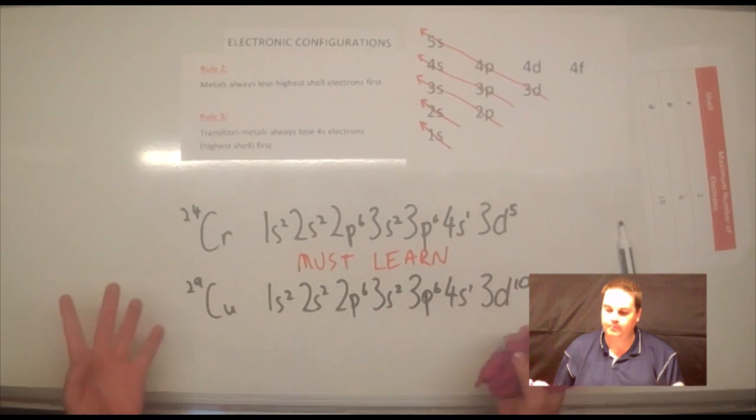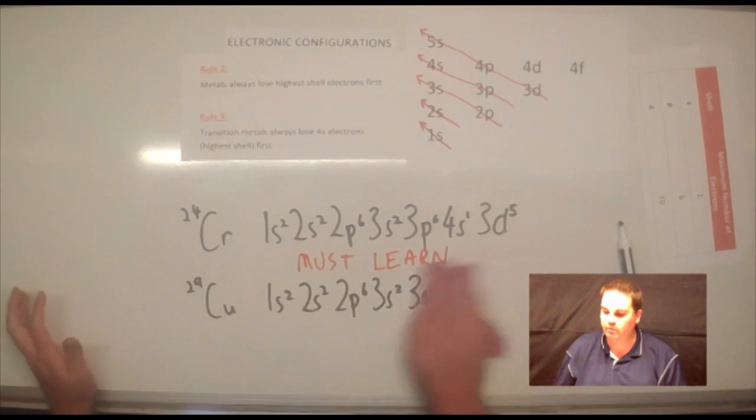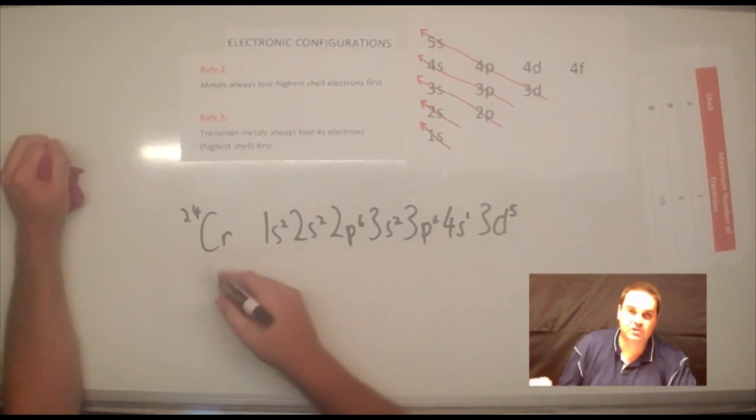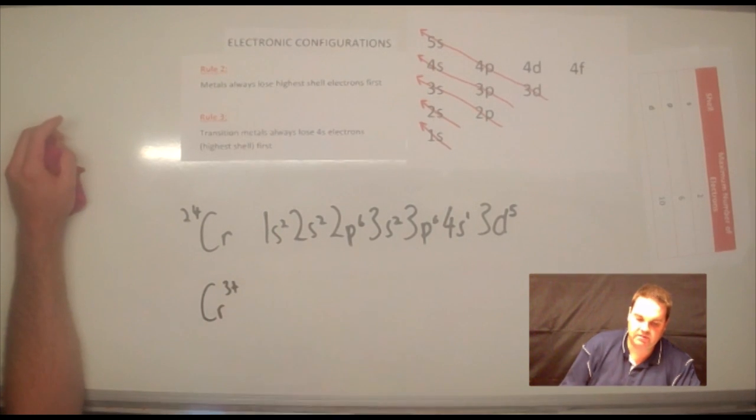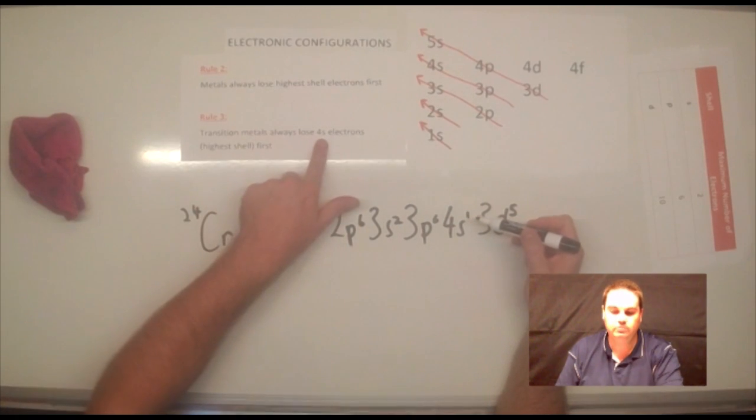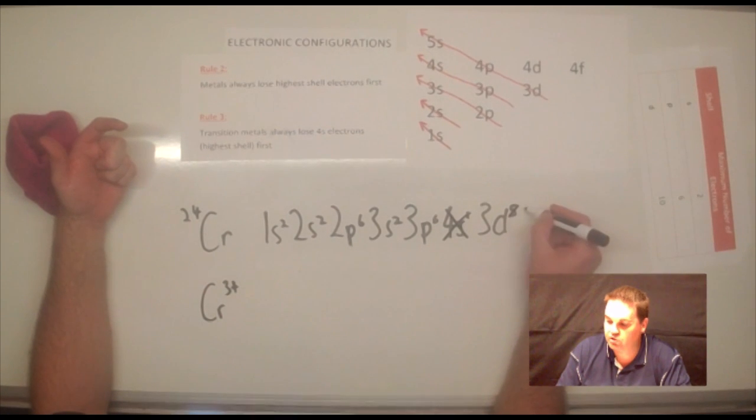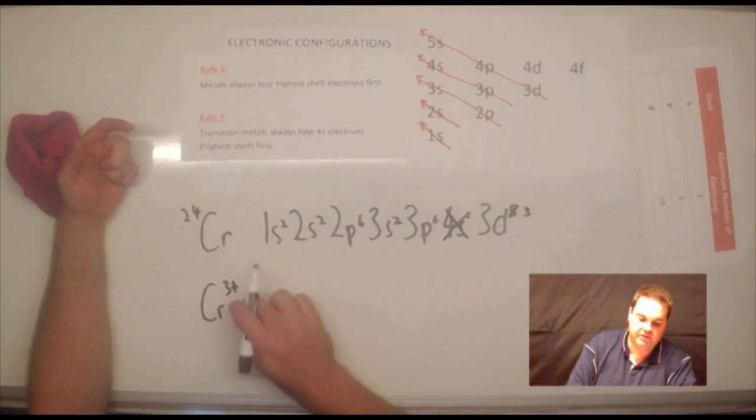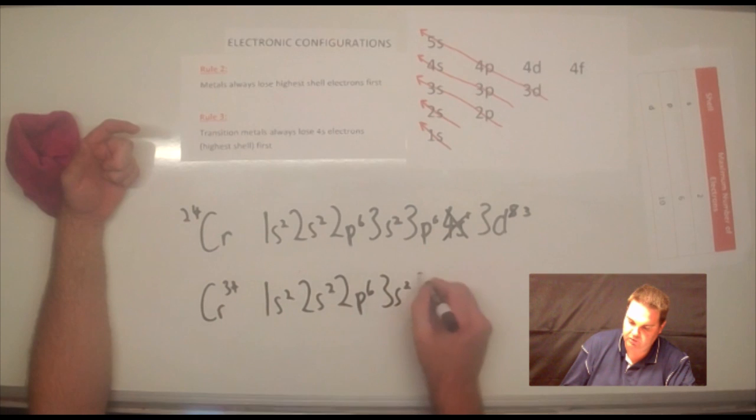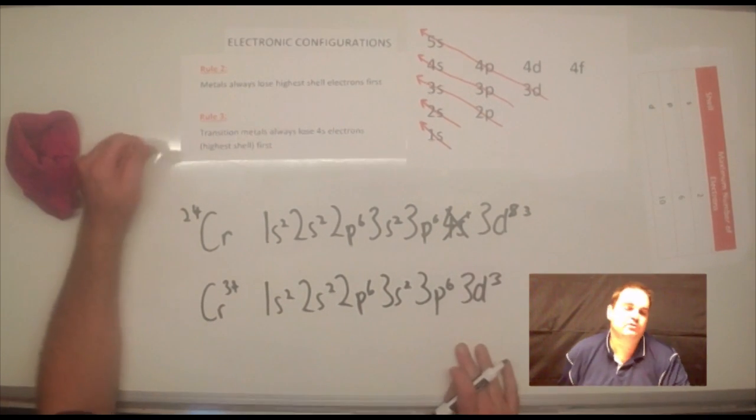When you form ions with these, it then goes through and follows exactly the same rule as we went before. So, if I leave up the chromium one up here, chromium normally forms a 3 plus charge. So, we see our 3 plus. What we do is we lose the highest shell electrons first. That's our rule. We lose their 4s electrons. We lose one out of that. We've still got two more to lose. So, we're going to lose two out of that to make it a 3. So, the electronic configuration for chromium 3 plus is 1s2, 2s2, 2p6, 3s2, 3p6, 3d3. That's the electronic configuration for chromium.